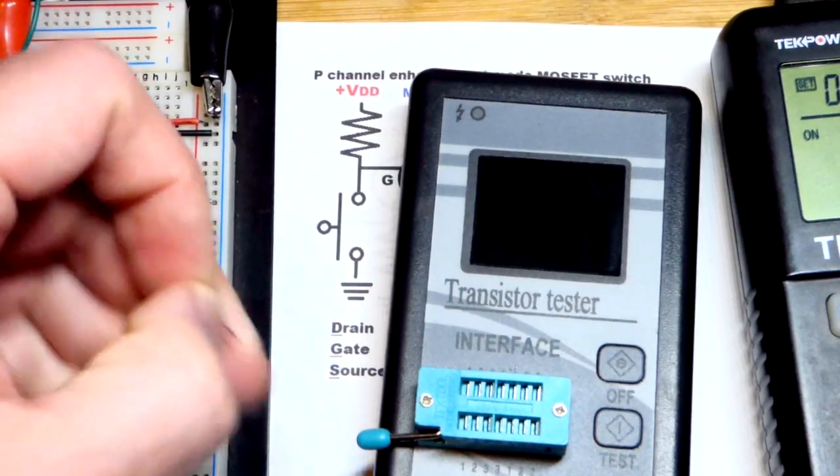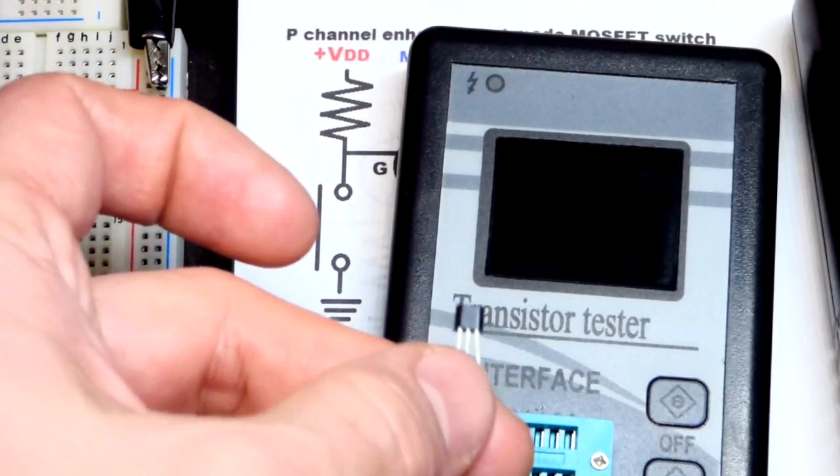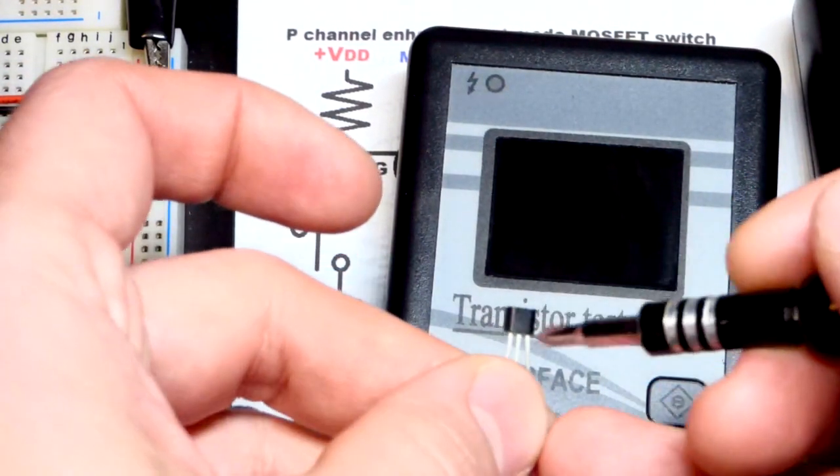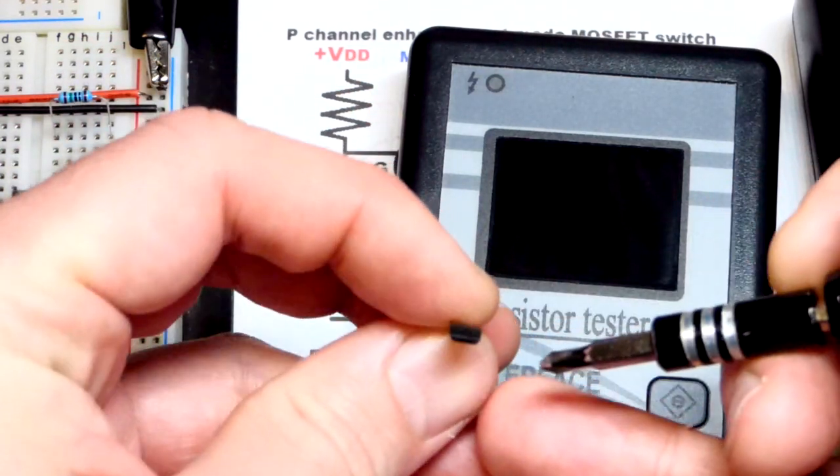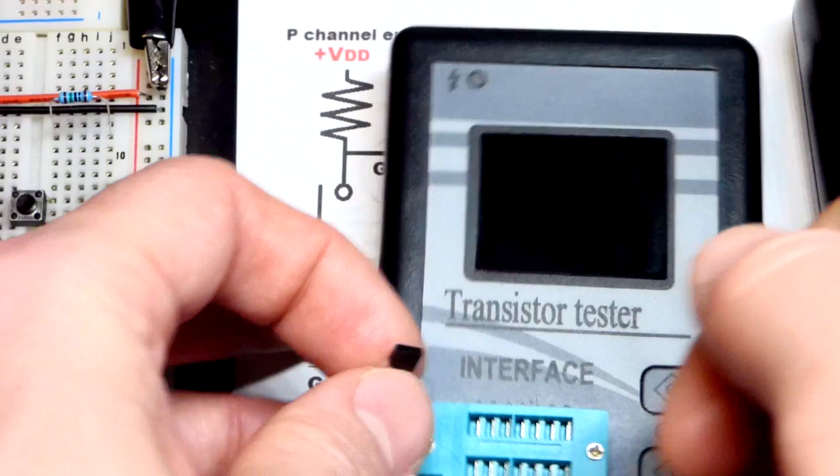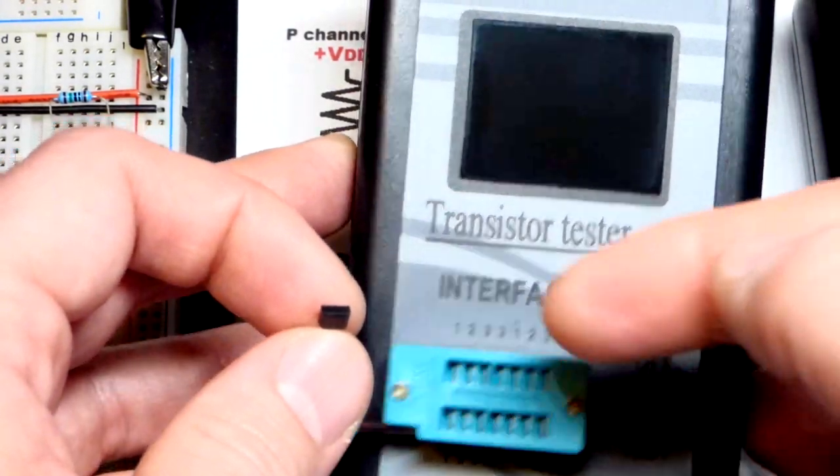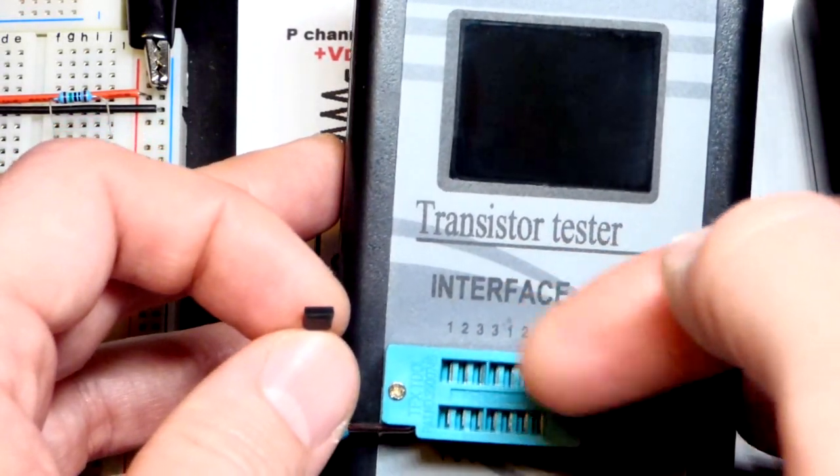There is the wider flat back, hopefully you can see that. The left slot is pin one, then we got two and then three. I'm going to put this in here.